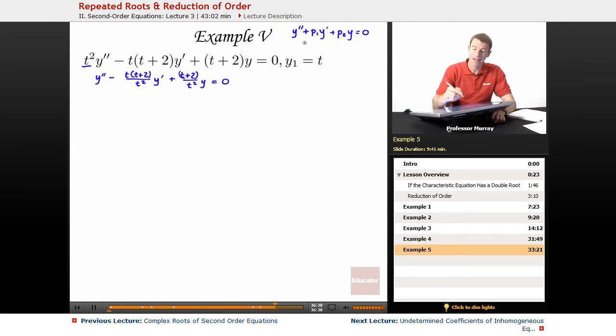So now I've got it into this form. And so my p₁, I can actually simplify that, is negative, if I cancel that t with that t², it's negative (t+2)/t. And I could even simplify that some more. That's negative 1 plus 2/t.